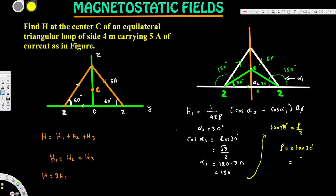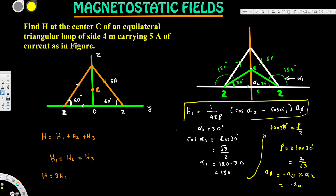To find the direction a5, if we take the vector along the negative y-axis: negative aY cross aC gives us negative aX. So the direction is negative aX. We now have all the information — the direction, cos α2, cos α1, and ρ — so we can plug everything into the equation.